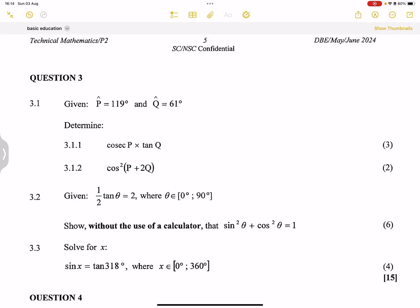They say, given that angle P is 119 and angle Q is 61 degrees, they say determine Cosec P times tan Q. All right. Now let's start with it. Firstly, we see that we've got an inverse ratio there, which is Cosec. Now, remember that Cosec is actually Cosec of theta is one over the sine of theta. That's the inverse of sine.